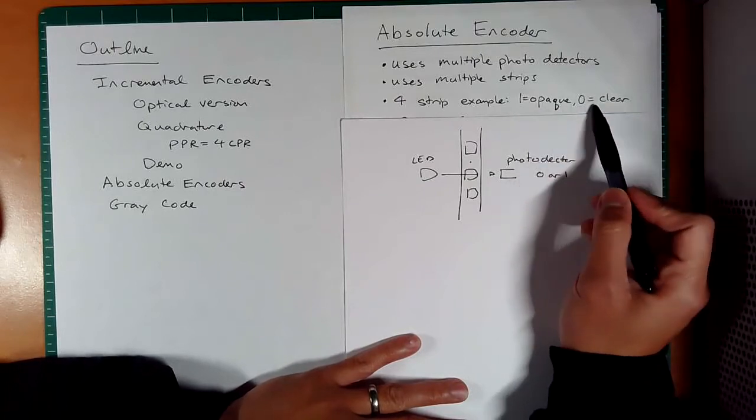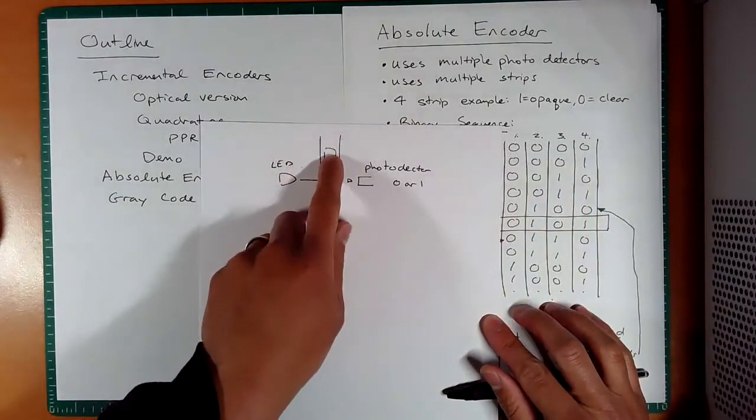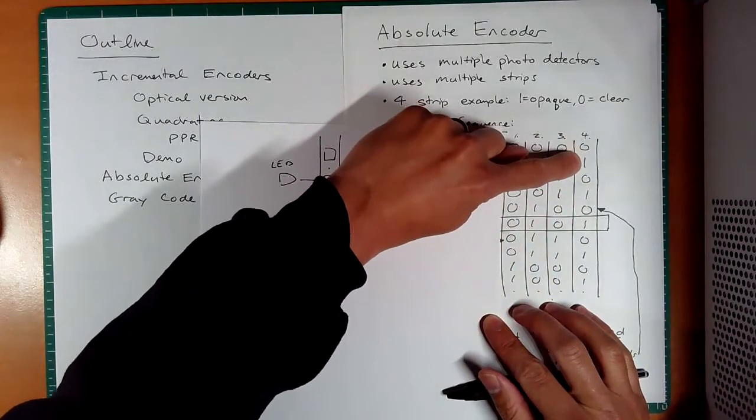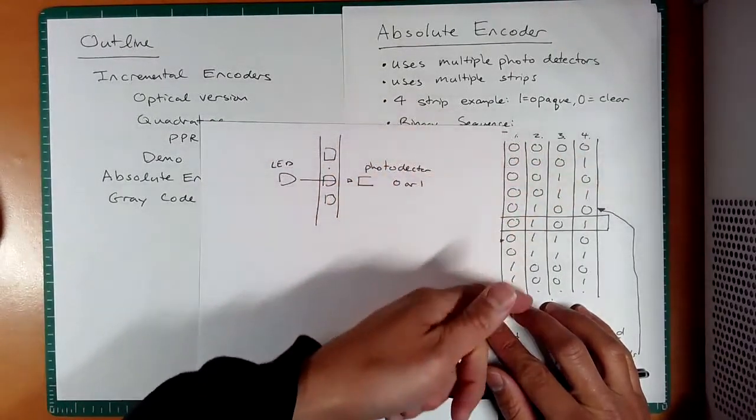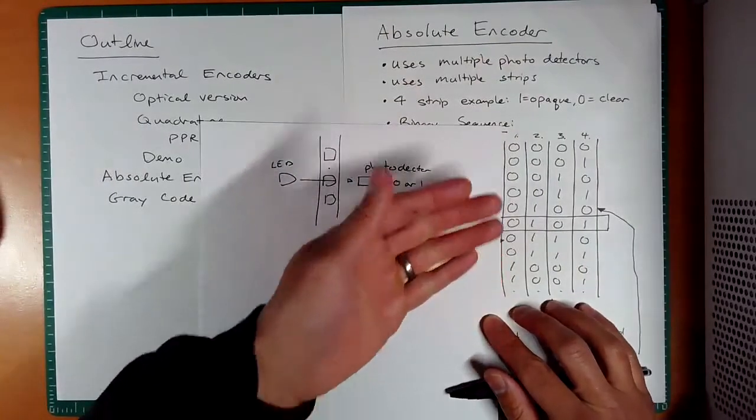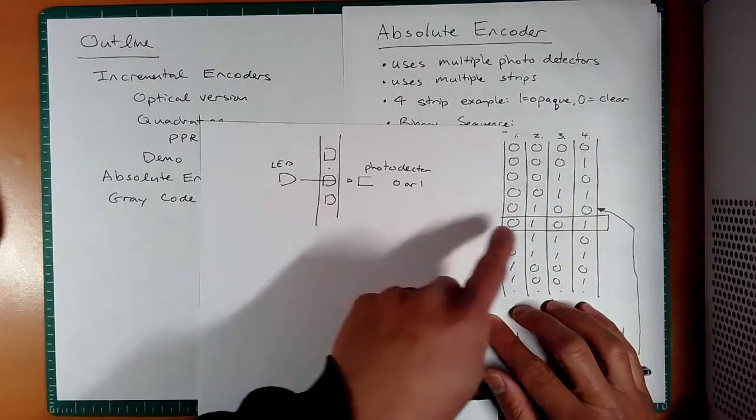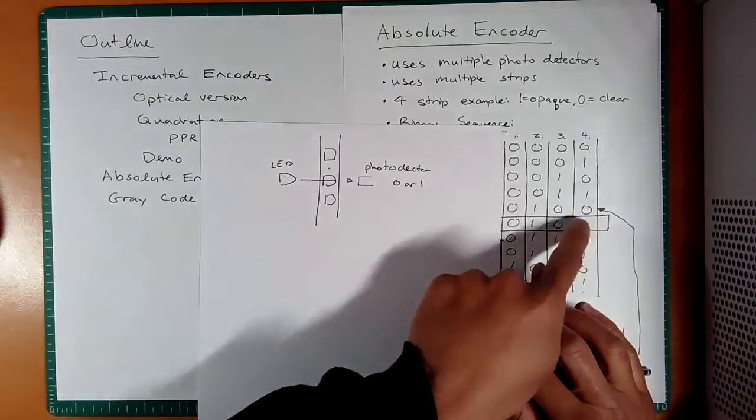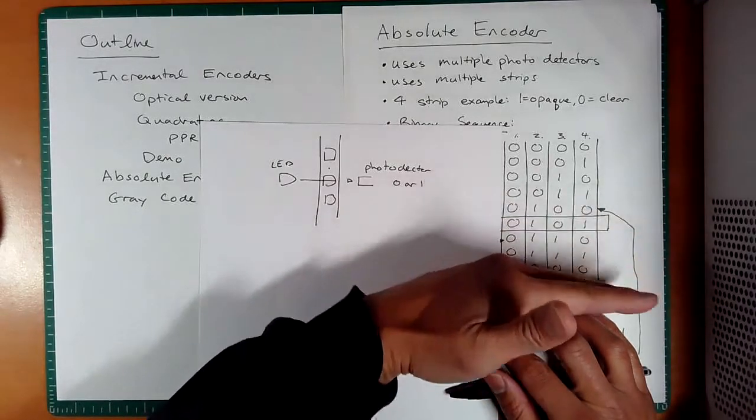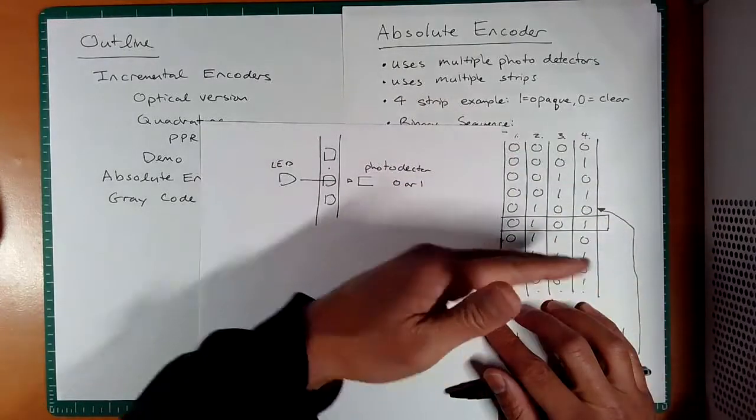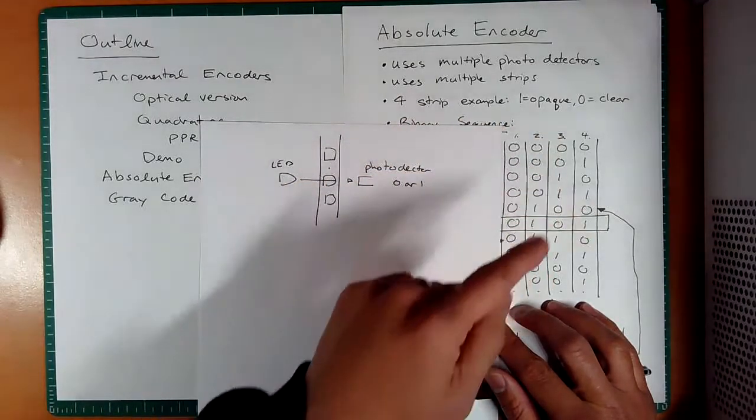So we'll just say one is opaque and zero is clear, and so imagine we just created a binary sequence of opaque and clear. So this is like a window, and this is like an opaque part right here. Zero, zero, zero, zero, one, zero, one, zero, so on and so forth. So you just have your four-bit binary sequence. So you have 16 total numbers, two to the four. And so let's say we put a set of LEDs and photo detectors in the front and back, and we want to just detect where we are. If we are at any row, you have a unique set, so you get your absolute position.